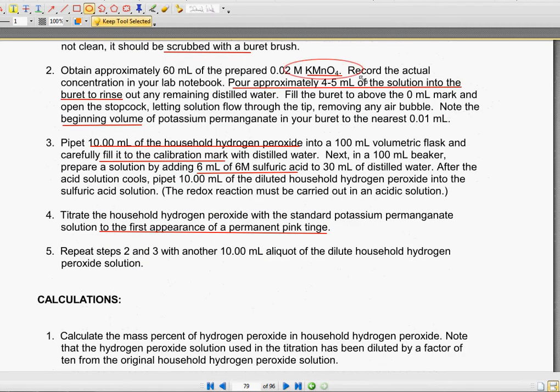You're going to obtain some potassium manganese oxide, I think that's what that's called. But essentially just some of this solution. You're going to record what actually, what the real concentration of it is, and pour it into your burette, about four to five milliliters.